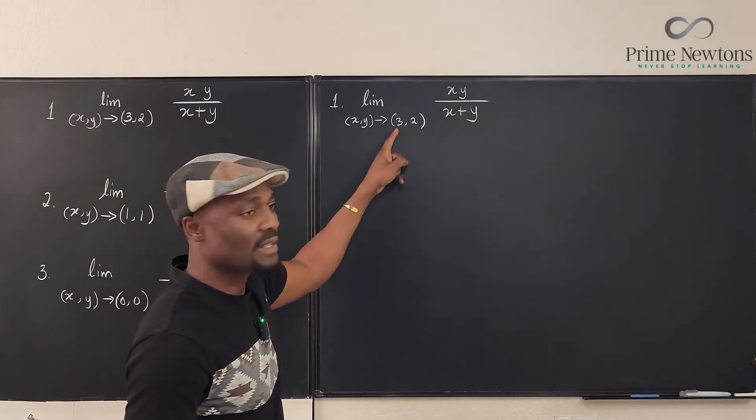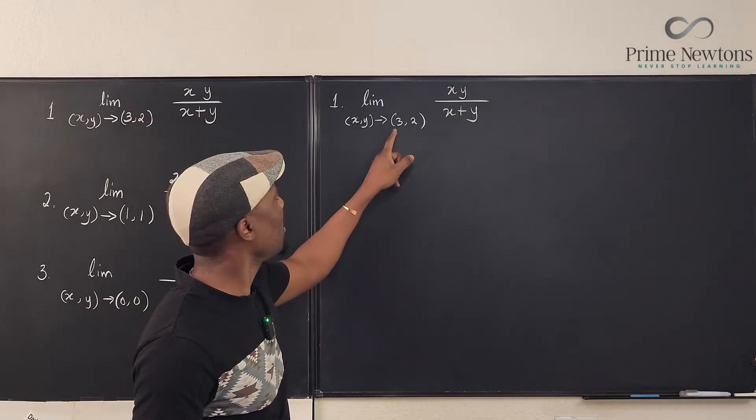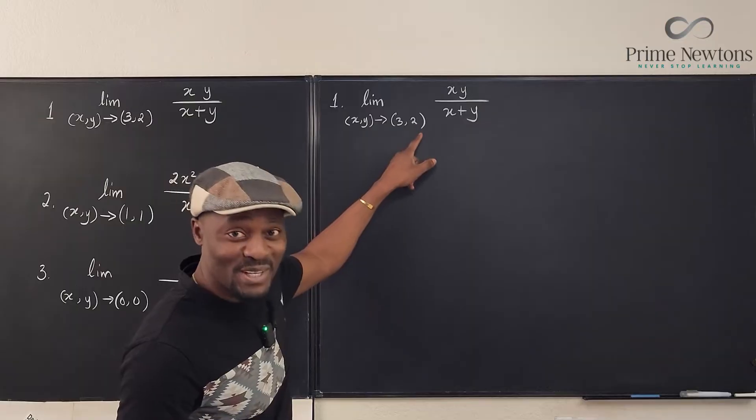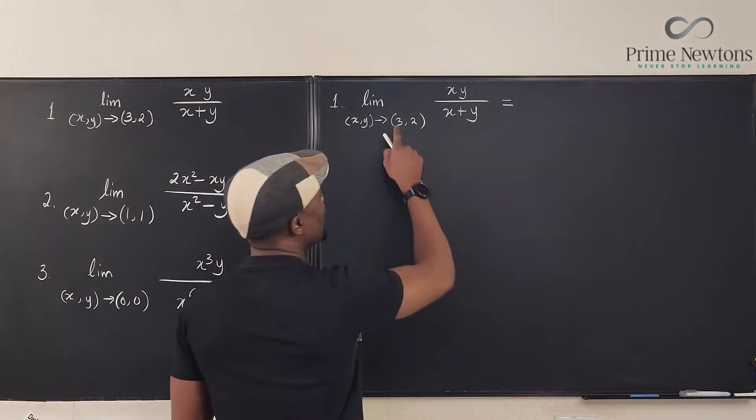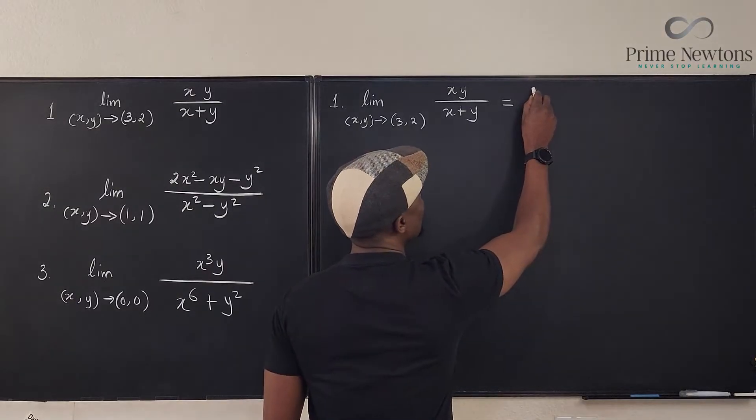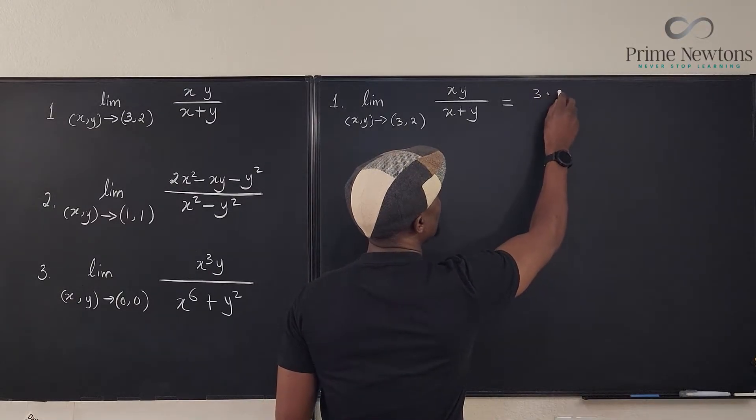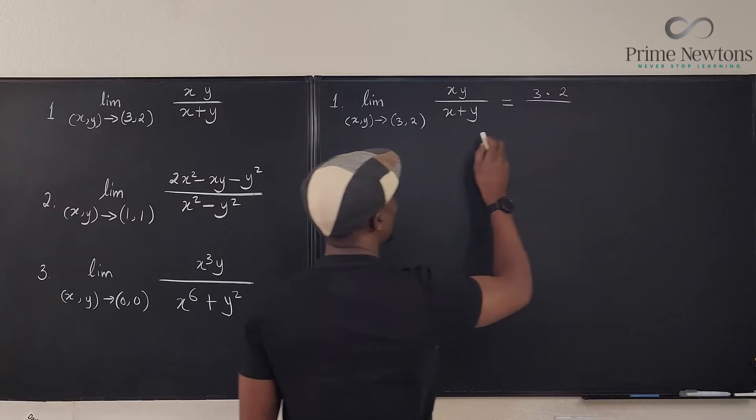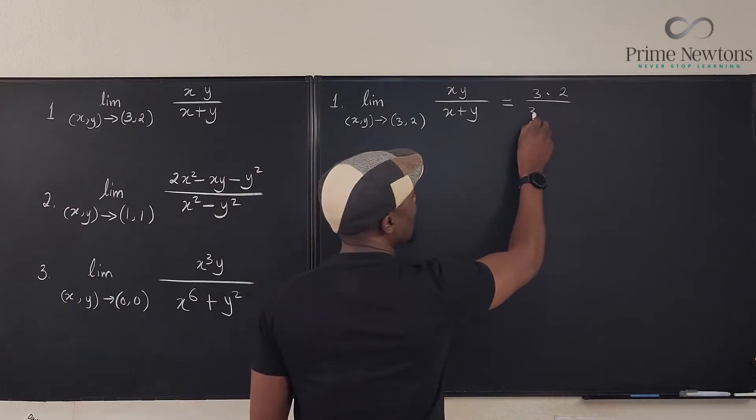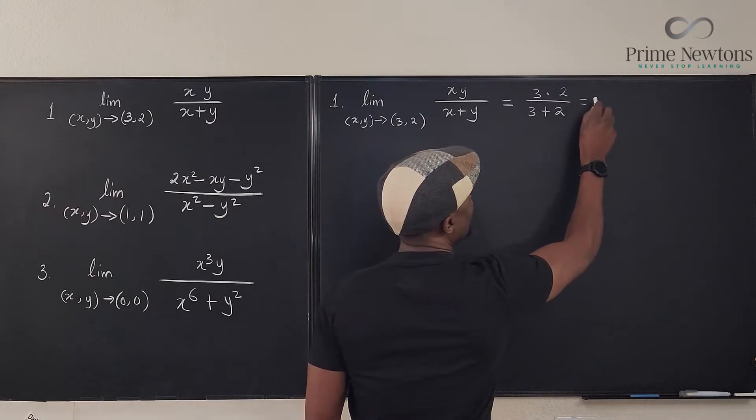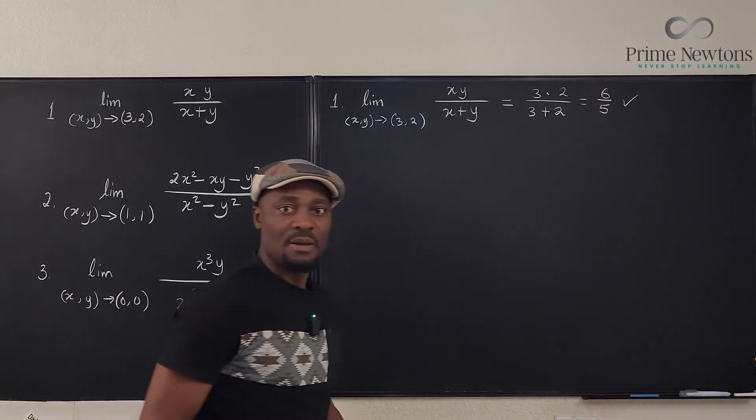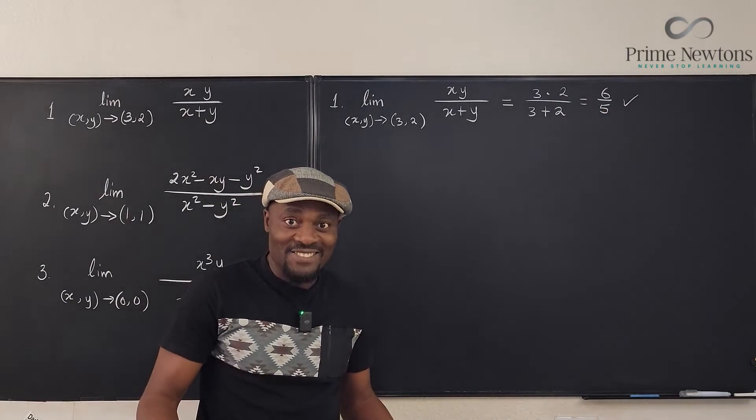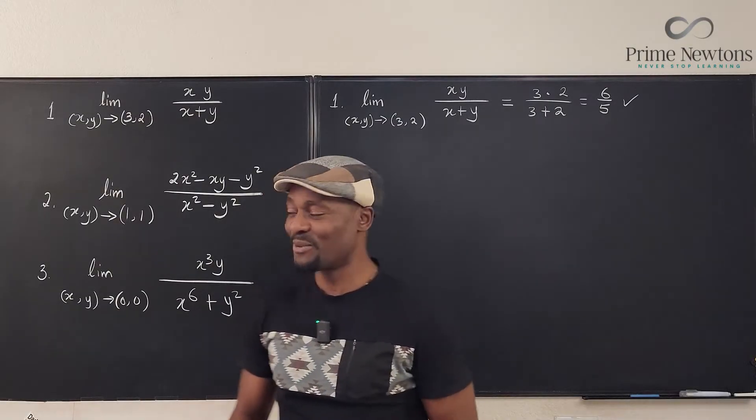So let's plug in 3 for x and plug in 2 for y. This is going to be equal to 3 multiplied by 2 divided by 3 plus 2. And my answer is 6 over 5. I'm done. That's the limit. It's easy, right? Okay, let's go to the next one.